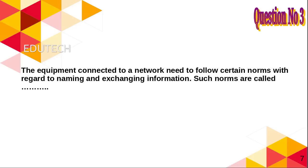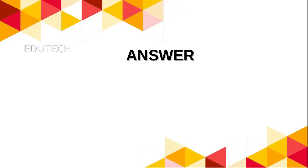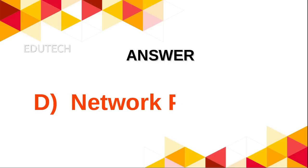Question 3: The equipment connected to a network need to follow certain norms with regard to naming and exchanging information. Such norms are called: A. Netmask, B. Server network, C. Client network, D. Network protocols. Answer: Network protocols.